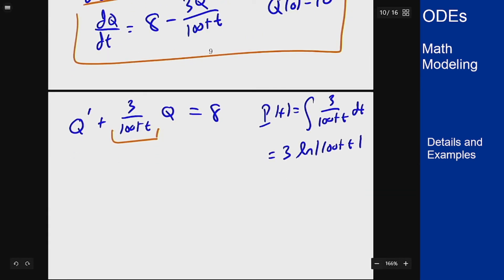My integrating factor here, mu, will be e to the 3 log of 100 plus t. We can put this 3 up in the exponent and then the e and the log will cancel, give me that my integrating factor here should be 100 plus t cubed.